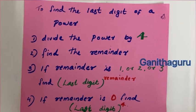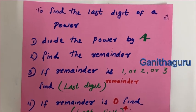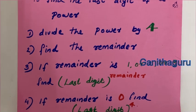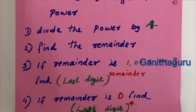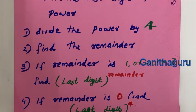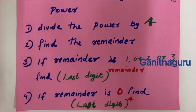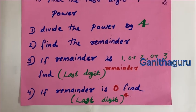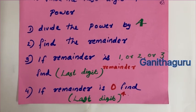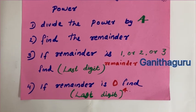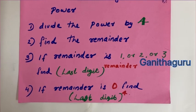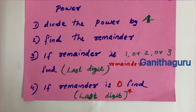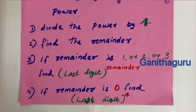To find the last digit of a power, divide the power by 4. We take the remainder. Last digit raised to the remainder.